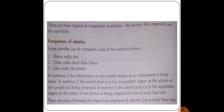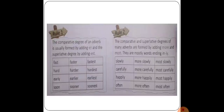There are some rules for forming degrees of comparison of adverbs. Rule number one: the comparative degree of an adverb is usually formed by adding '-er,' and the superlative degree by adding '-est.' For example: fast → faster → fastest; hard → harder → hardest; early → earlier → earliest. Note that some spelling changes occur — for example, 'early' becomes 'earlier,' where the 'y' changes to 'i' before adding '-er.'